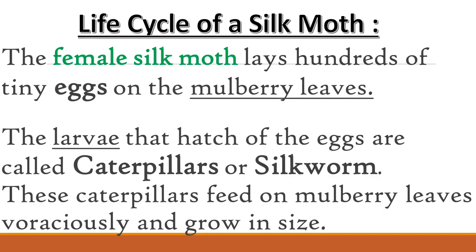Let us now look at the life cycle of a silk moth in detail. The female silk moth lays hundreds of tiny eggs on the mulberry leaves. The larvae that hatch from the eggs are called caterpillars or silkworms. These caterpillars feed on mulberry leaves voraciously and grow in size. Note that 'larvae' is the plural of 'larva,' and 'voraciously' means enormously.